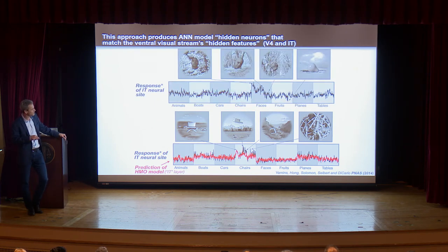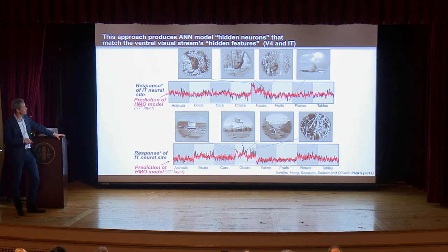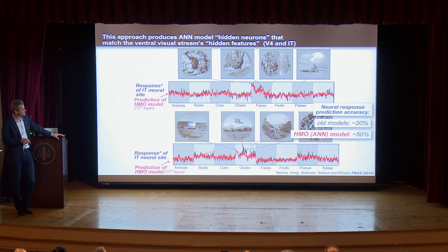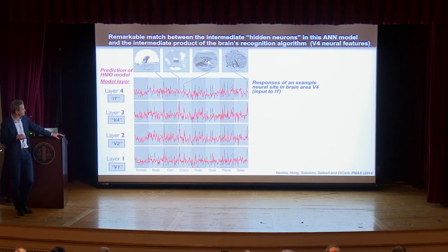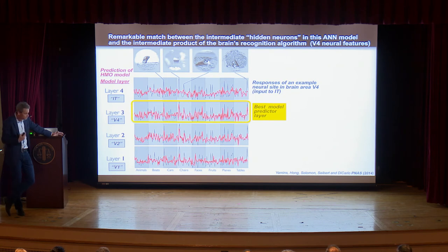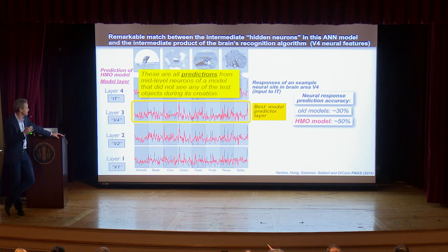Here's a face neuron — it responds on average more to faces, but something more subtle is going on. The model predicts it again quite well. Overall, about 50% of explainable variance is explained by these models. Here's a V4 neuron with crazy responses to many images — V4 is the input to IT. The middle layer of the model provides the best predictor of this V4 neuron, even though we did not optimize for V4 or IT — we were just trying to solve the task. These are all predictions, not data fits.